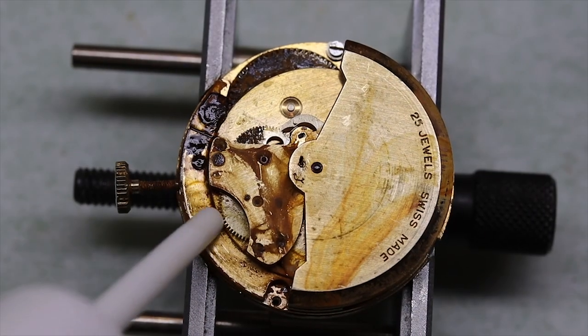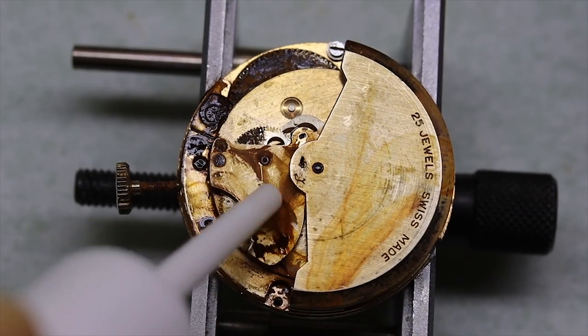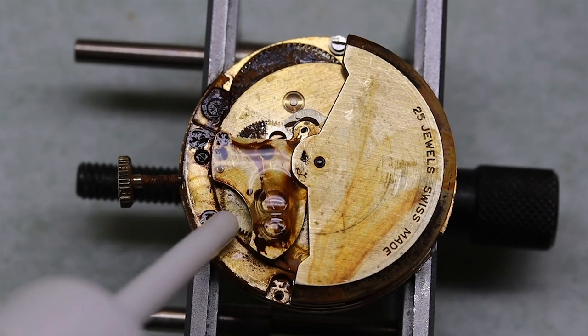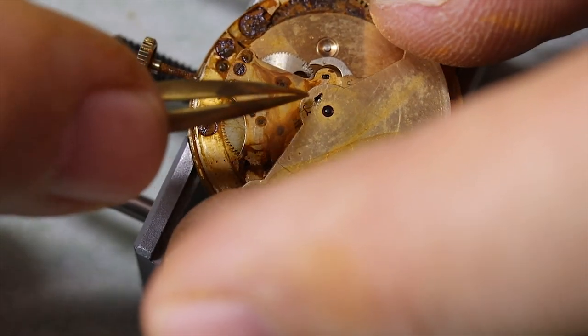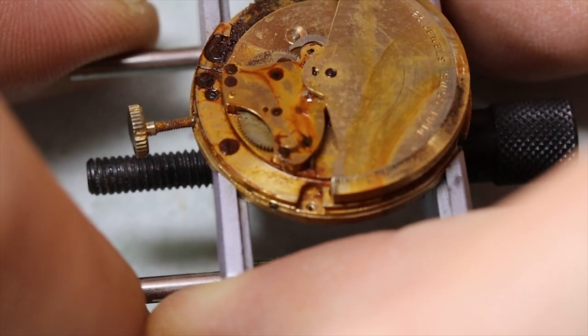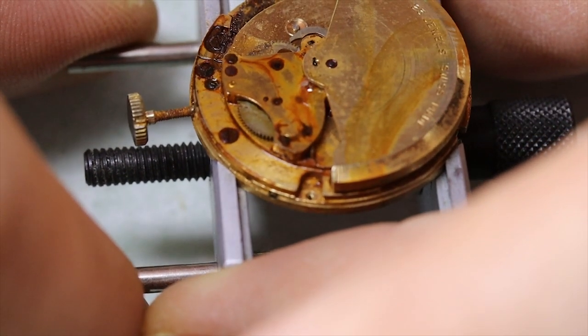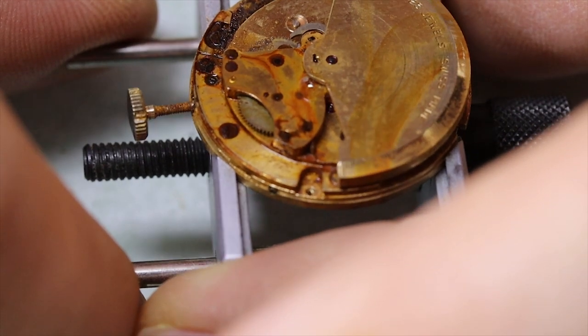So let's first get the cannon pinion off. That way we can take all the train off on the other side. Well, the cannon pinion, if it's not rusted shut we can, theoretically we can. But this rotor is proving very difficult to get off.